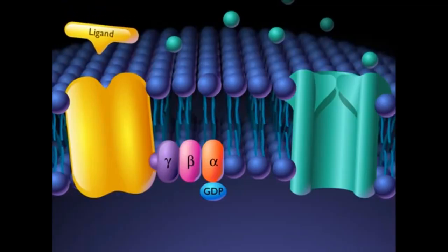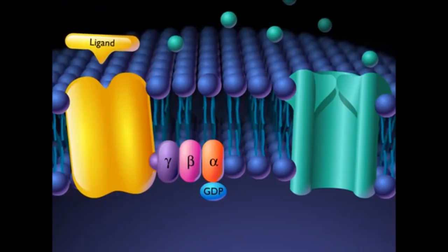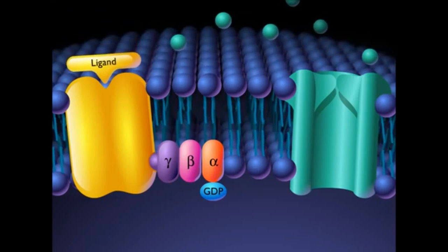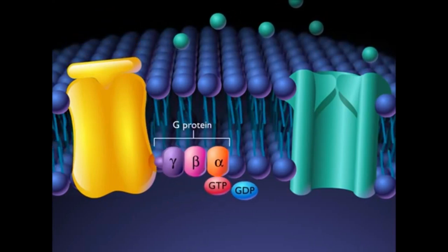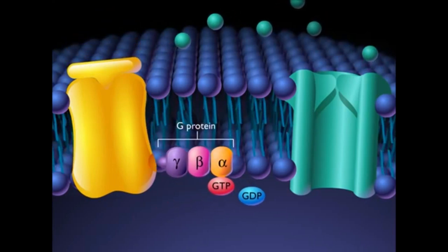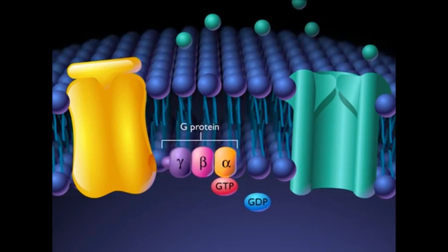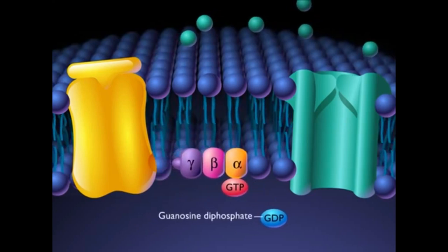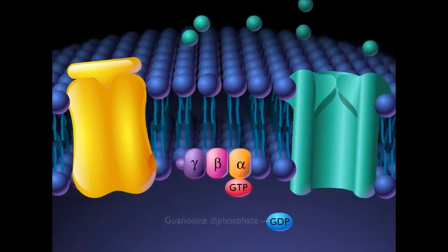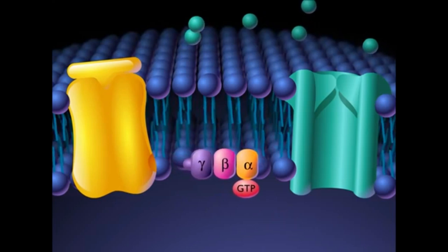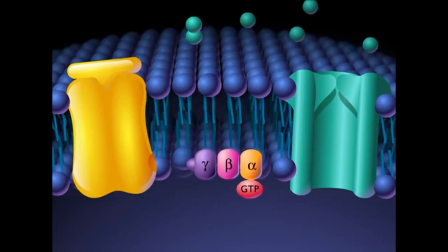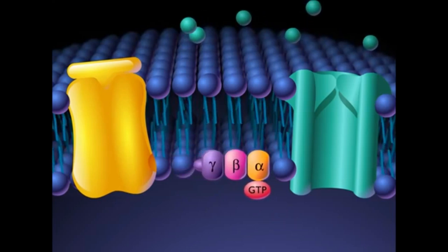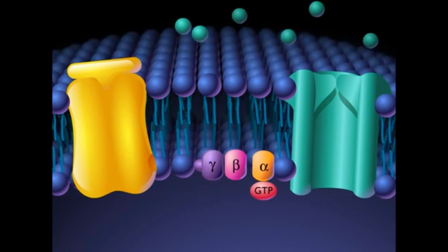When a ligand binds to the receptor site on the outside of the cell membrane, the G-protein changes conformation and guanosine triphosphate replaces the guanosine diphosphate on the alpha subunit of the G-protein. The activated alpha subunit then separates from the beta and gamma subunits.